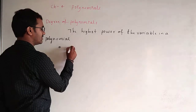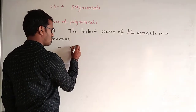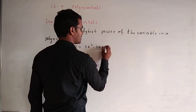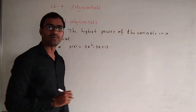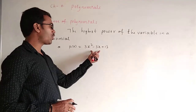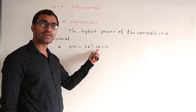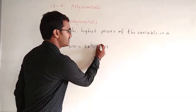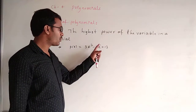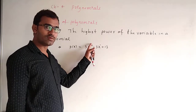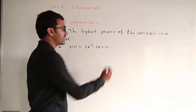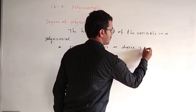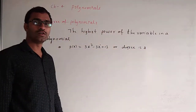Let's take the first example: P(x) = 3x² − 3x + 13. Here the variable is x. The powers present are 1 and 2. The highest power of the variable is 2. Therefore, the degree of this polynomial is 2.